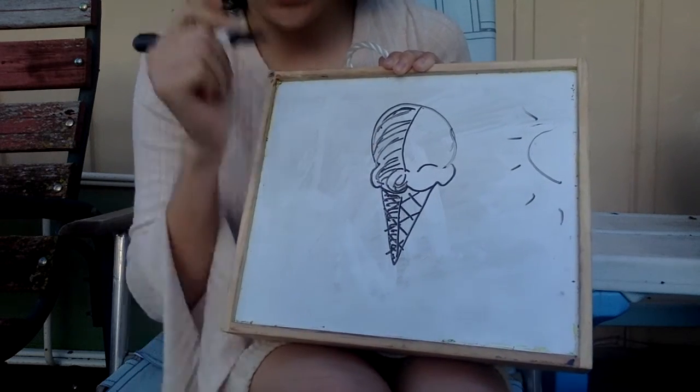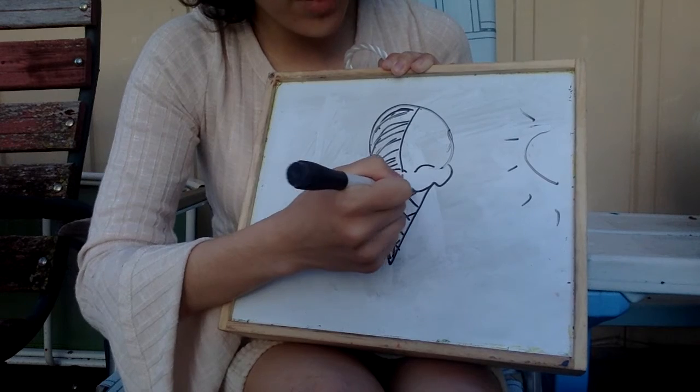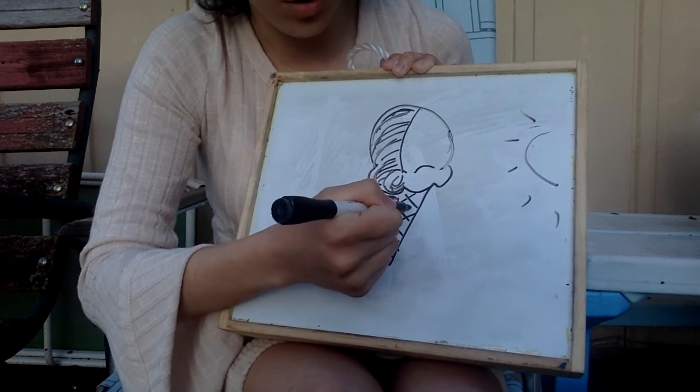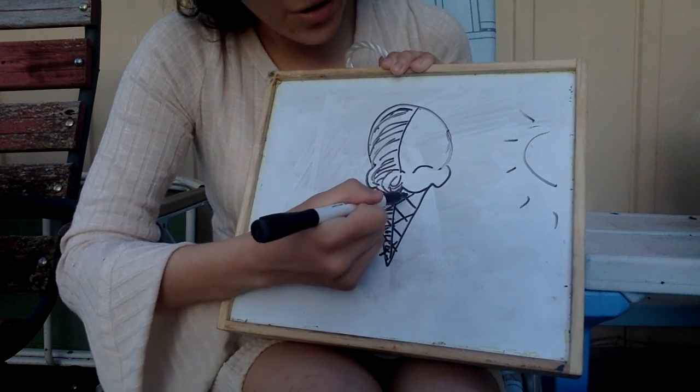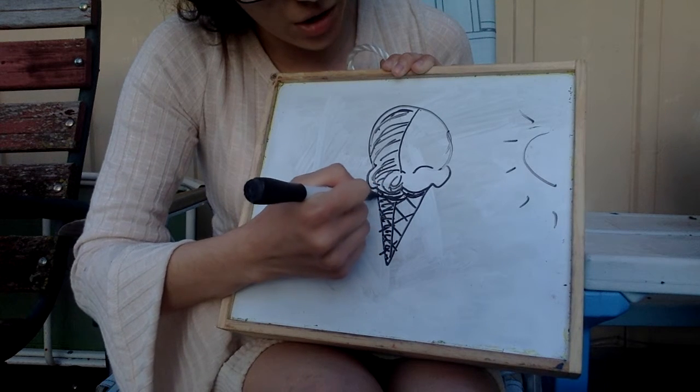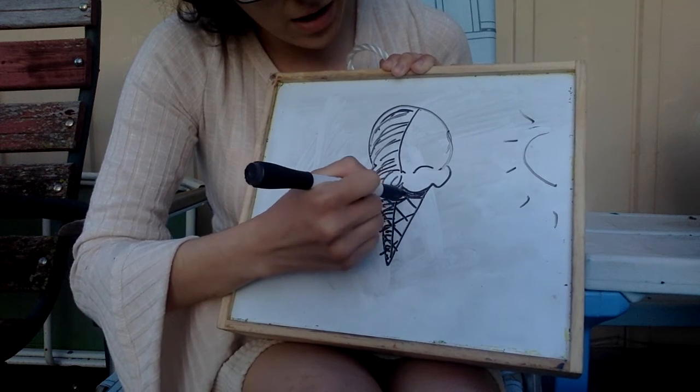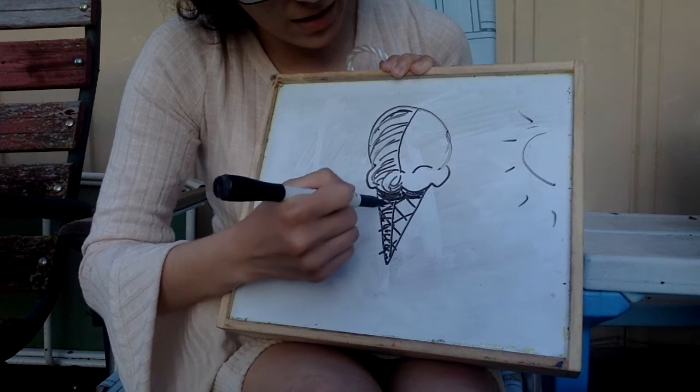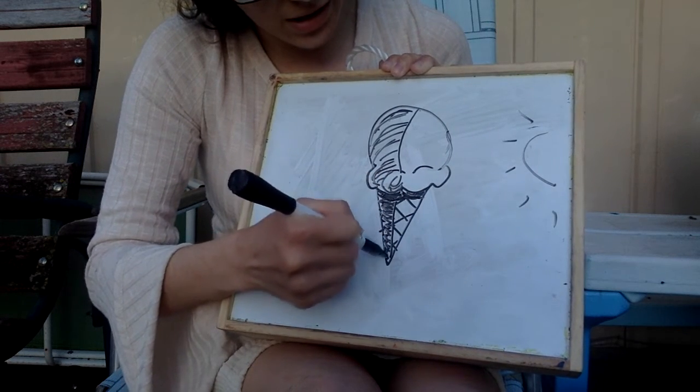Now here's the thing. If the ice cream is sitting on top of the cone, that means there's going to be some shadows underneath the ice cream too, aren't there? So I'm going to color in this part just a little bit and make this a little bit darker.